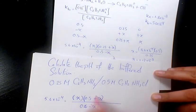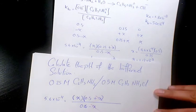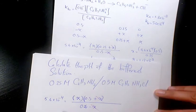That's the ethylamine. These two cancel out, and X will be 0.25 times 5.6 times 10 to the power of negative 4 divided by 0.5.